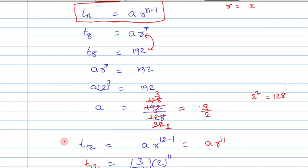From this, a equals 192 divided by 128, because 2 to the power of 7 equals 128. On simplifying this, you get a equals 3/2.